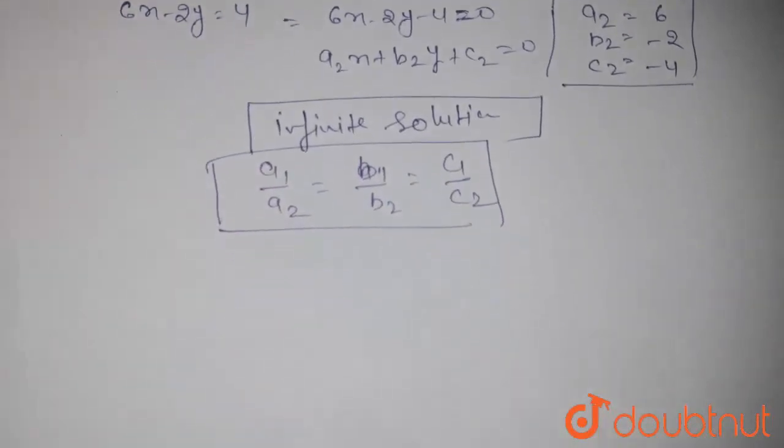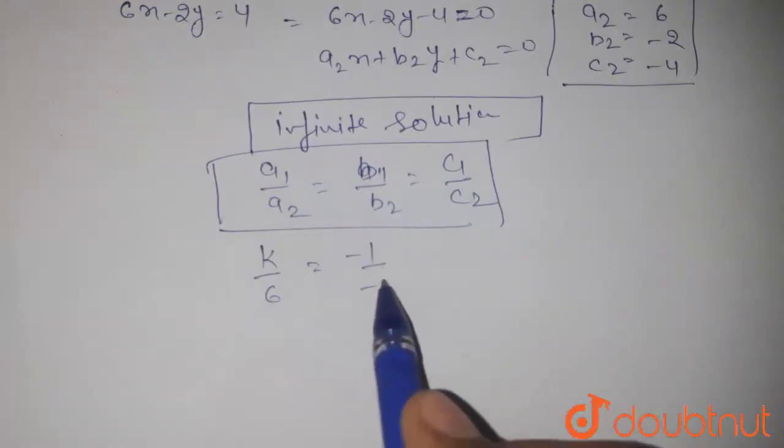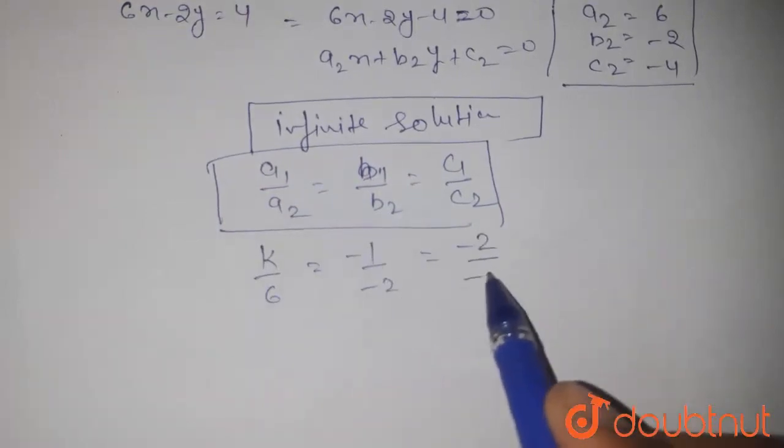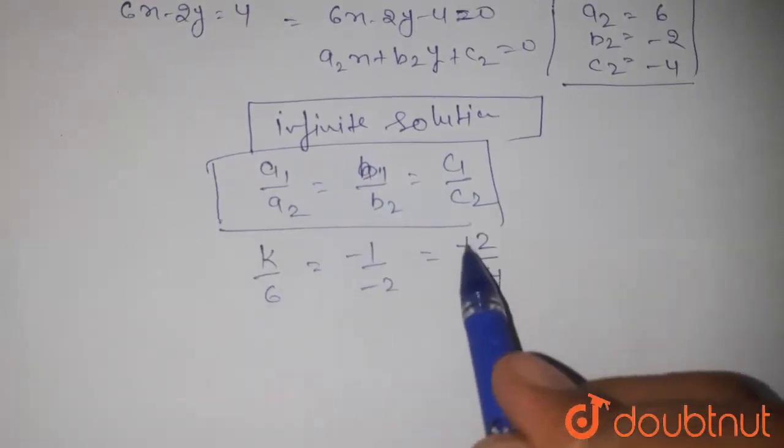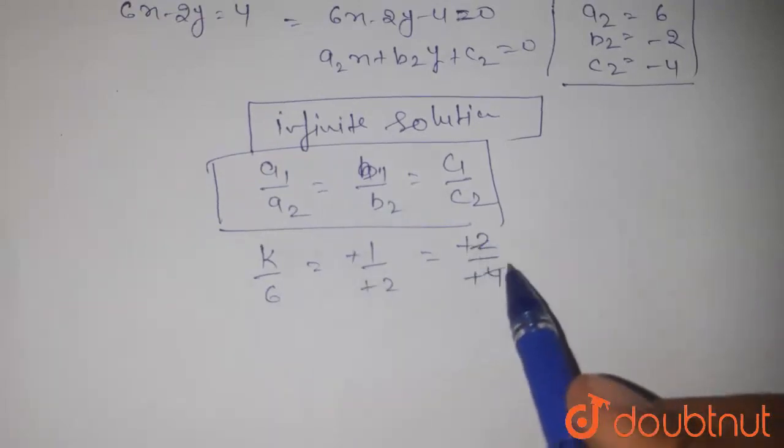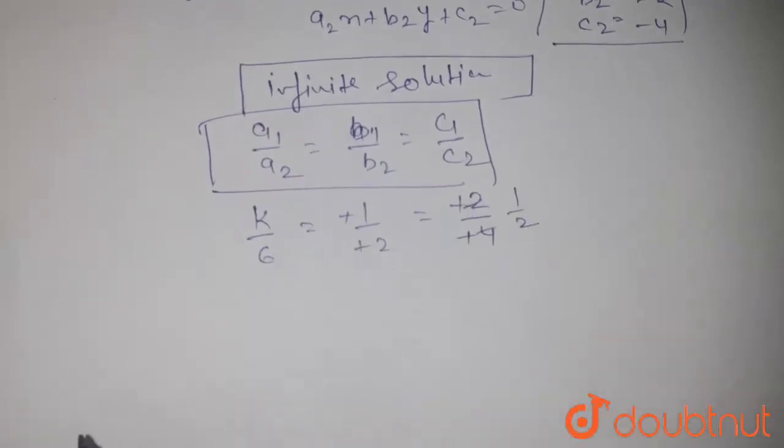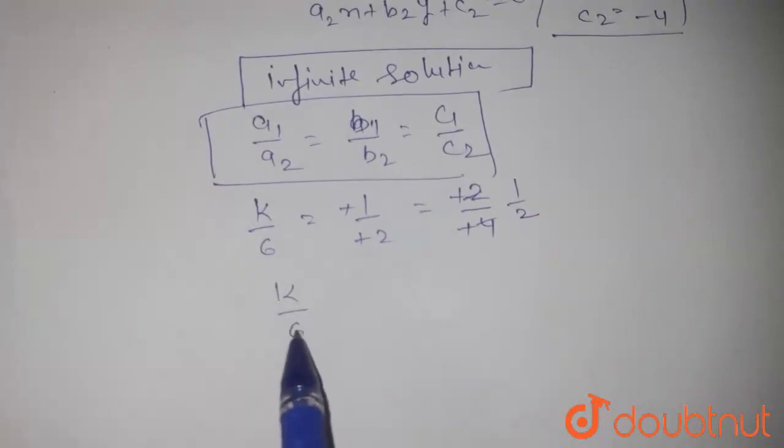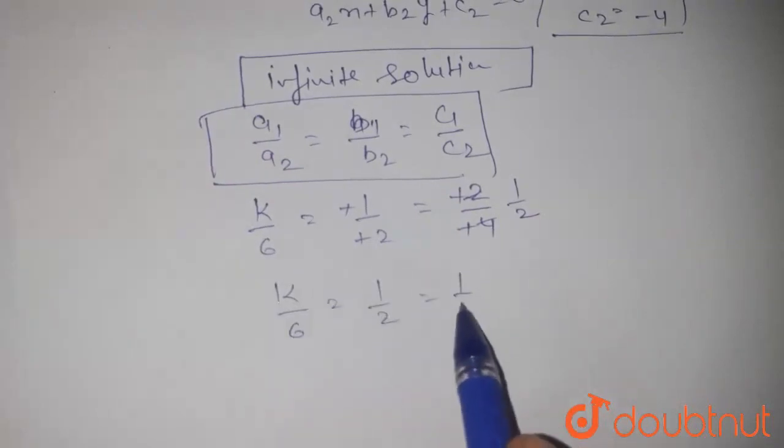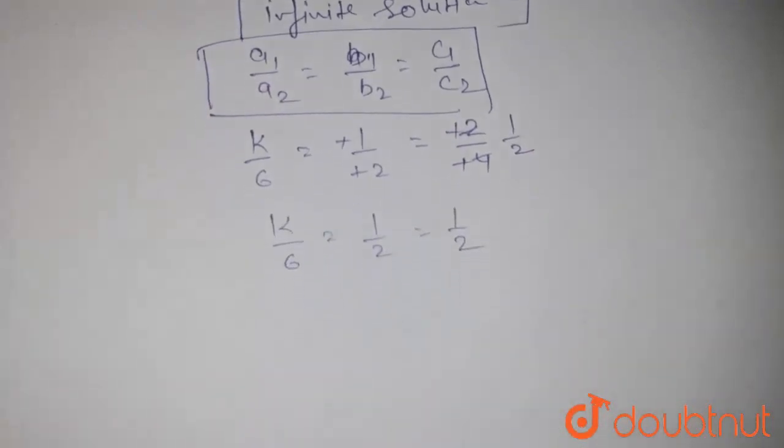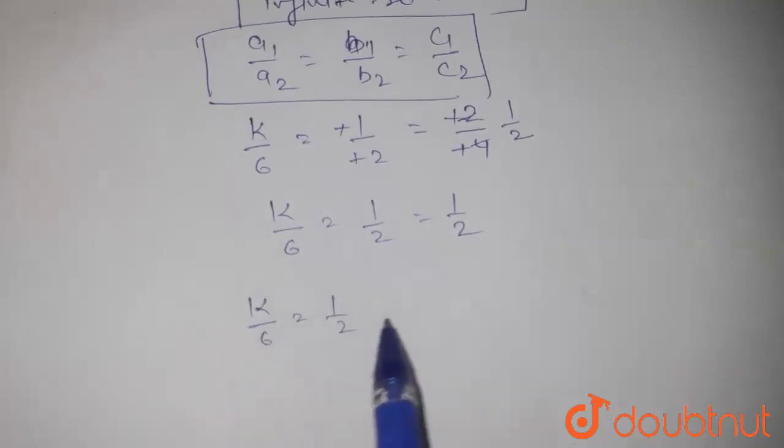Now we substitute all the values. k upon 6 equals minus 1 upon minus 2 equals minus 2 upon minus 4. The negatives cancel, so 1 by 2 and 2 by 4 becomes 1 by 2. This gives us k by 6 equals 1 by 2 equals 1 by 2.